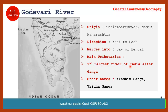The next very important river is Godavari. It is the second largest river of India after Ganga. It is also known by other names such as Dakshin Ganga and Vriddha Ganga. It flows from west to east and finally merges into the Bay of Bengal. Its origin is Nasik.